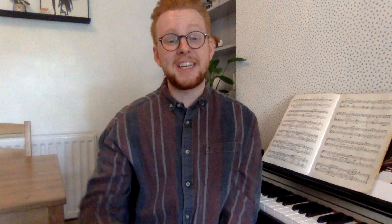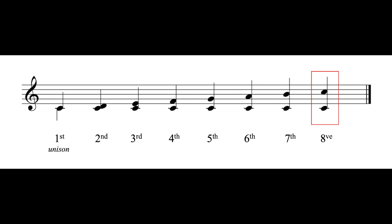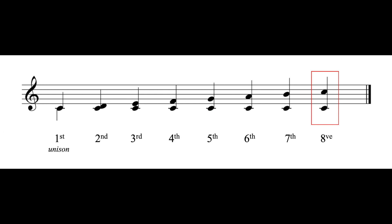Now, when we go from C to the C above it, this is not an eighth as you might expect, but actually an octave. We have gone a whole eight steps from C to the next highest C. Similarly, when C and C are next to each other, this is not a first, but a unison. Imagine two voices singing the note together.